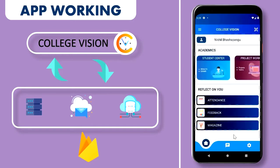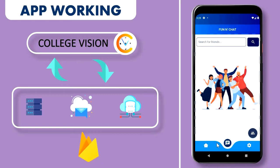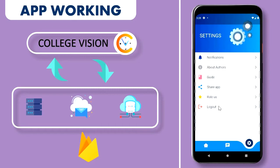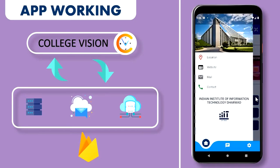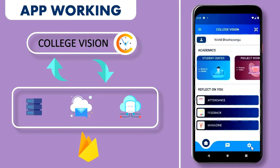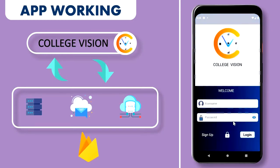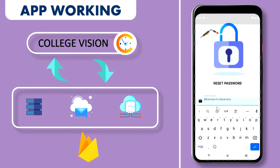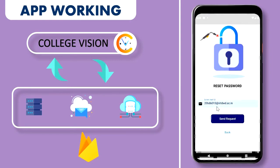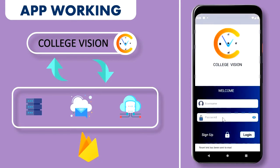On the settings page, you have notifications, about, author's guide, and logout options, along with details about the institute. There is also a reset password option — you enter your email ID, click 'Send Request,' and a reset link is sent to your mail so you can reset the password.